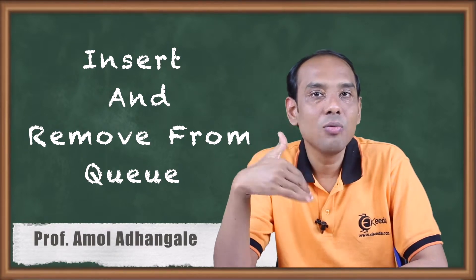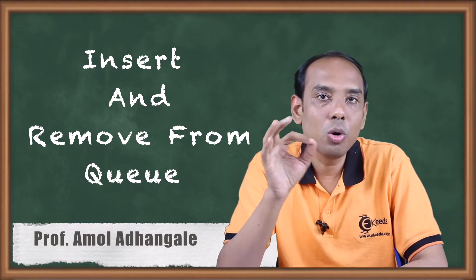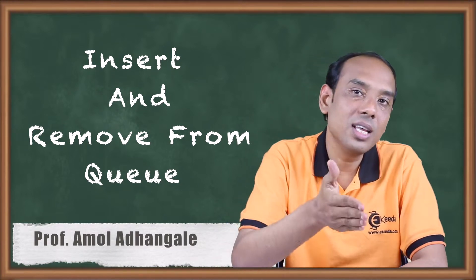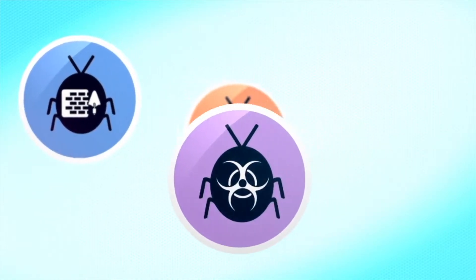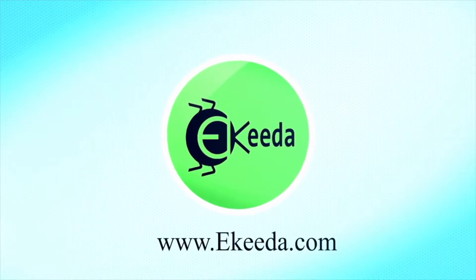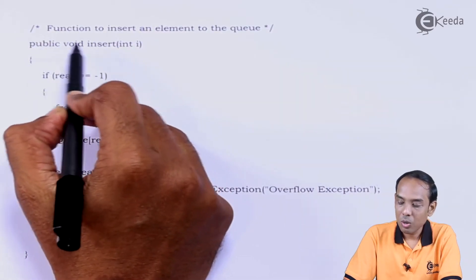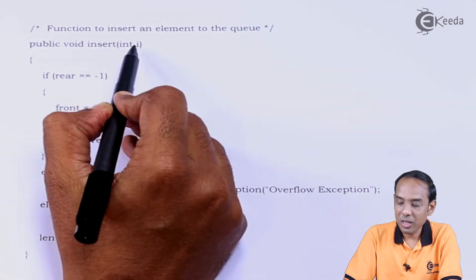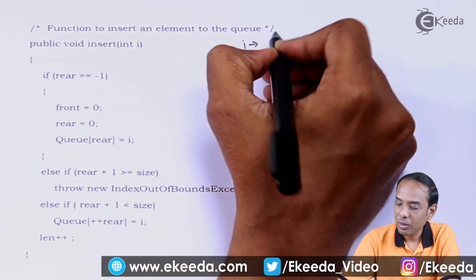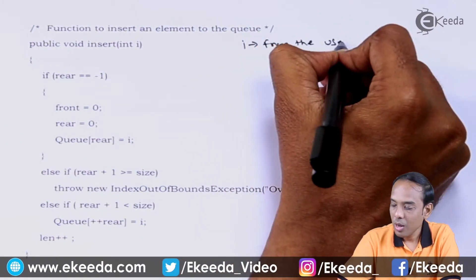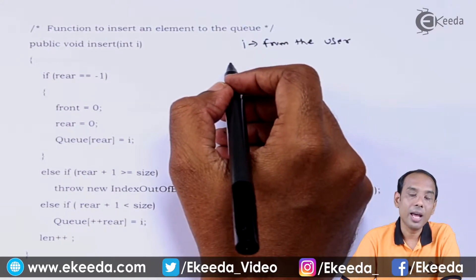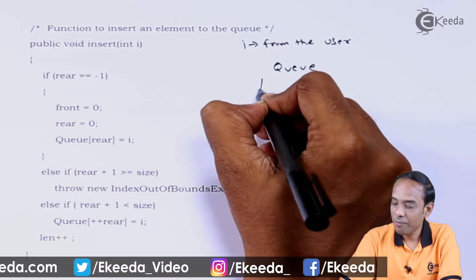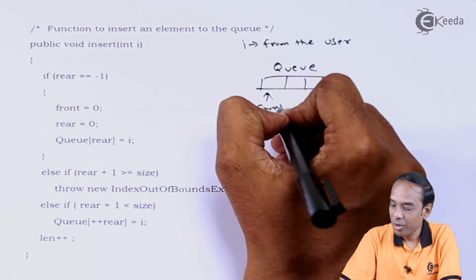Whenever we are going to insert, we are going to increase the size of the queue, and whenever we delete an element from the queue, we are going to decrease the size of the queue. In case of queue we have two variables called front and rear.